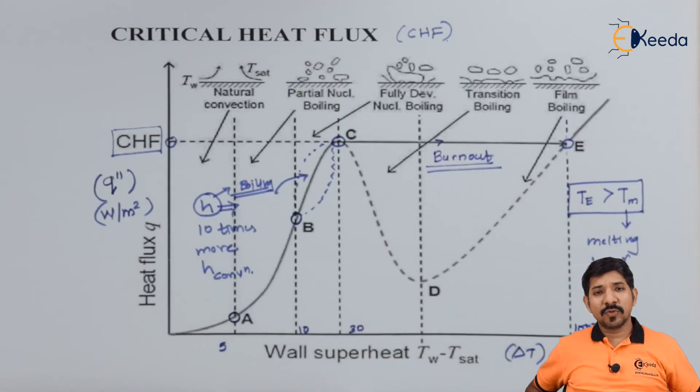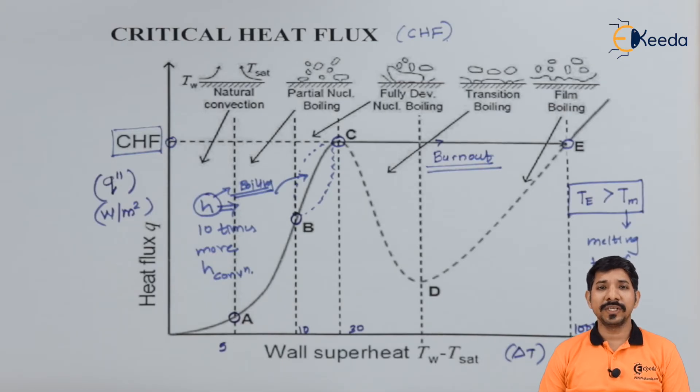Basically there are so many correlations which are available, wherein for a given diameter or for a given combination of fluid and surface, the CHF can be calculated. There are so many ways of finding CHF. One is the empirical correlation. Then second one is by conducting the experiment. Then third one is by various numerical methods.